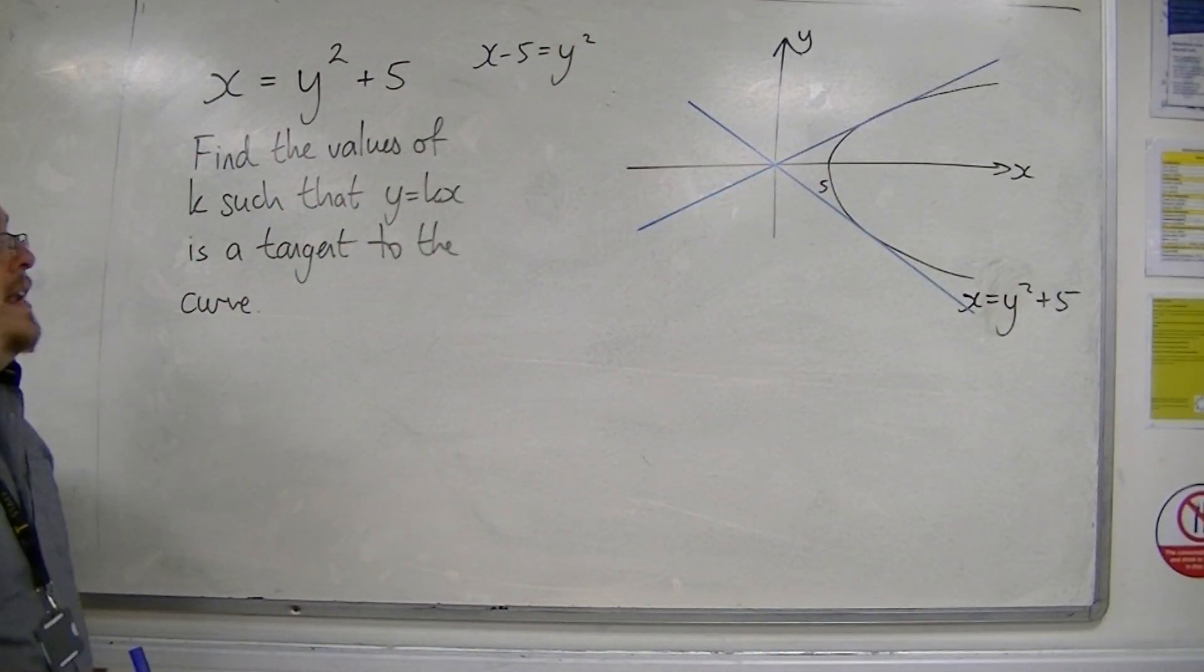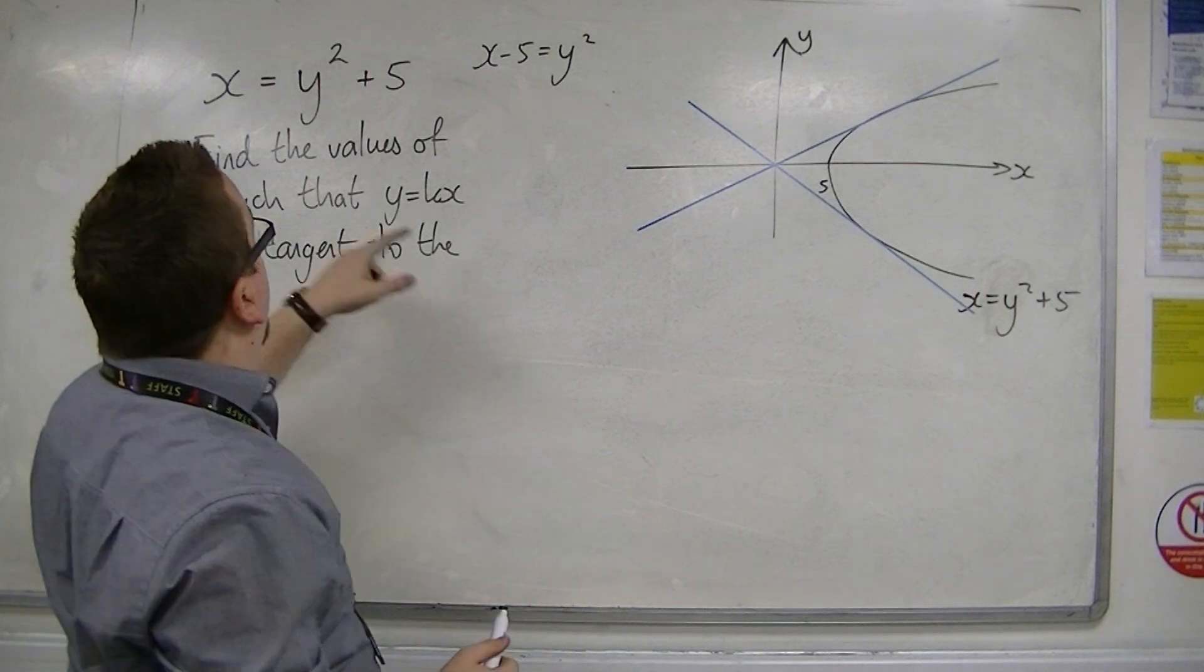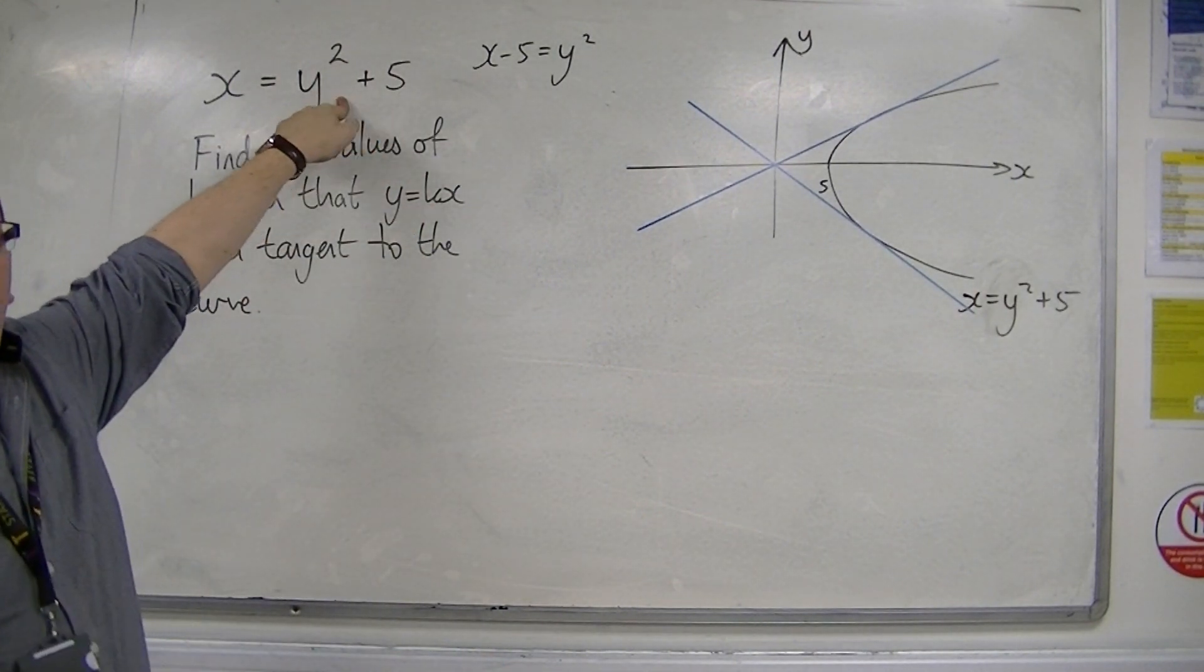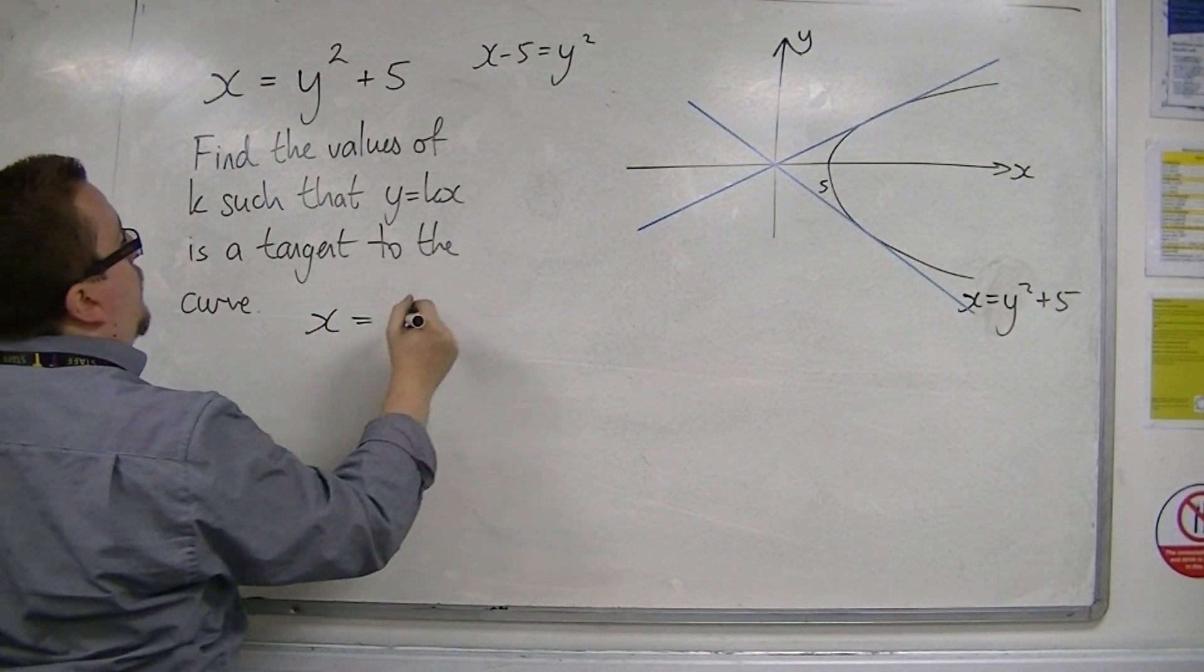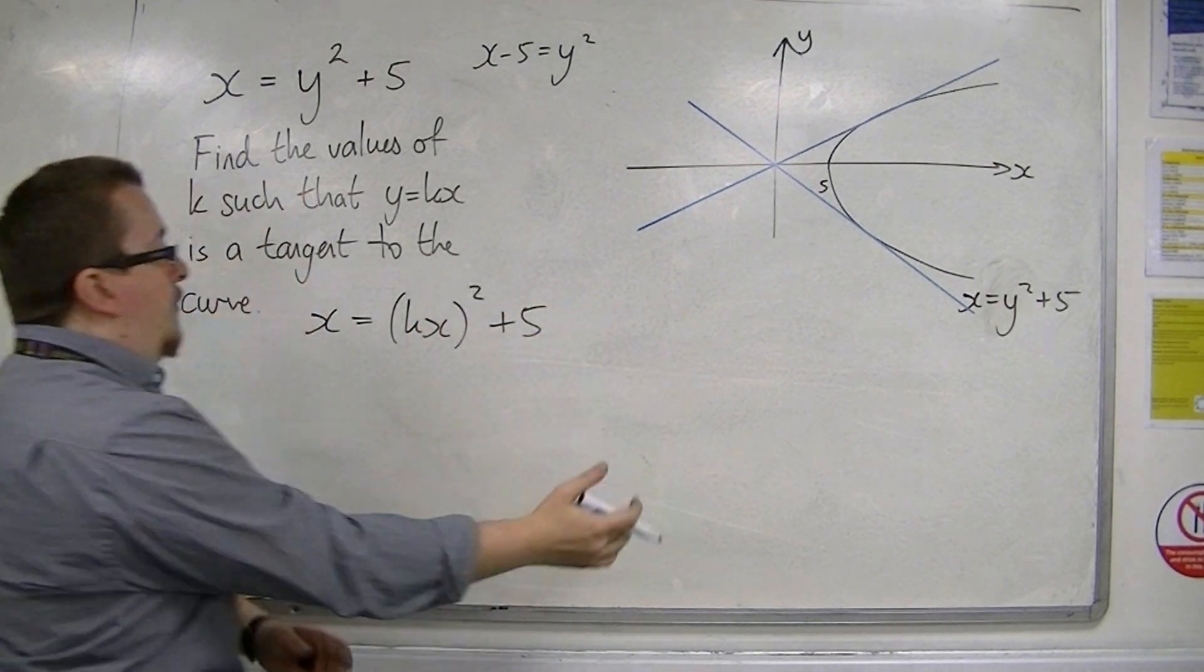OK, so I want to work out the values of k that will make those lines that are tangent to the curve. So I'm going to substitute in y equals kx into this equation. That will determine where they intersect. So I'm going to have x is equal to y squared, which is now kx. So kx squared plus 5.